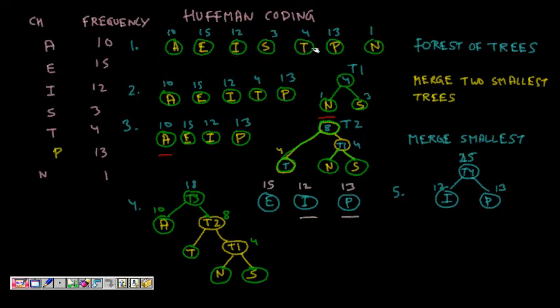Now what you do, we merge the two smallest trees. So for merge, here which two trees have smallest weight? N and S. So they have the smallest weights. We merge them, they become the left and right child. And now the root is T1 and it has a weight of four, which is the sum of weights of the other two, its two children.